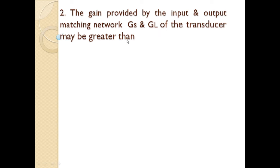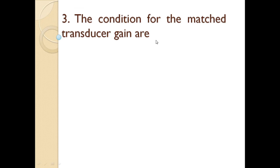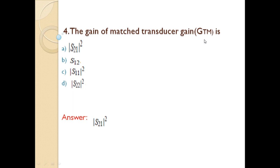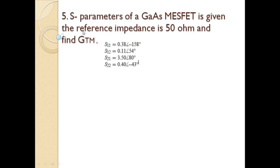Question 2: The gain provided by the input and output matching networks GS and GL may be greater than 1. Question 3: The condition for matched transducer gain — option A: GS = 0; option B: GT = 1; option C: γS = 1; option D: γS = 0 and γL = 0. The answer is option D: γS = 0 and γL = 0, which is the simple matching approach. Question 4: The gain of the matched transducer gain GTM is |S21|².